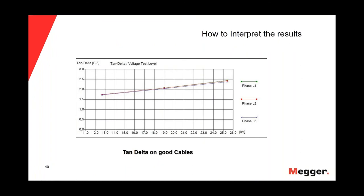As many tan delta measurements we have for a cable, the easier it will be to make a decision. We recommend that after the fifth year of the cable, we start with the tan delta test. That way we will have many measurements when we need to make an assessment regarding replacement. In this slide, we are seeing what we consider a good cable — there is some voltage dependency of the tan delta, but it's not significant. All three phases of this circuit appear okay and we could return this circuit to service, repeating the test in three or four years.